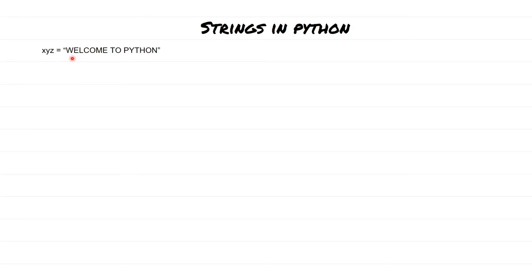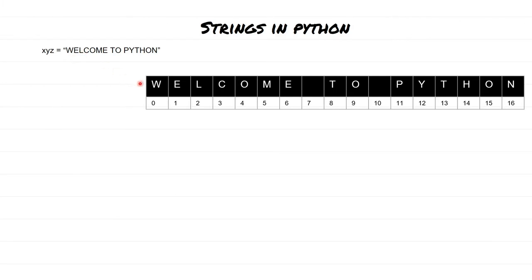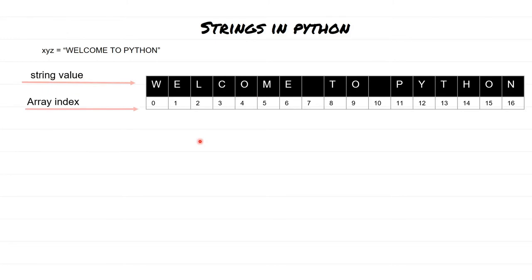In Python, all strings are actually an array, so when we say an array, all the strings are going to have an index number. Whenever you type 'welcome to python', it internally looks like an array and it is going to have an index, which is also called an array index. Index always begins with zero and then increments by one, so whatever the first letter is will have an index of zero. Welcome to python internally is assigned as shown on the screen.